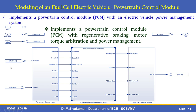The Powertrain Control Module block implements a powertrain control module with regenerative braking, motor torque arbitration, and power management. For a fuel cell electric vehicle, the inputs to the PCM are: acceleration, deceleration, vehicle speed, battery state of charge, battery current, battery power, motor speed, fuel cell voltage. The outputs are: motor torque, braking command, fuel cell current, and fuel cell temperature.